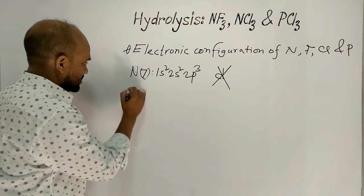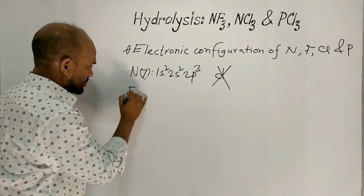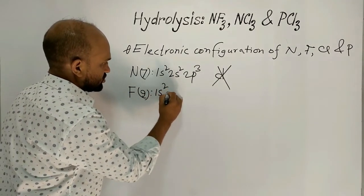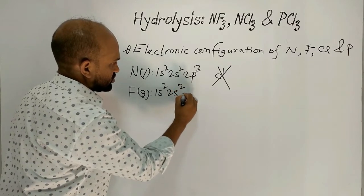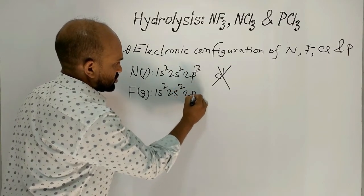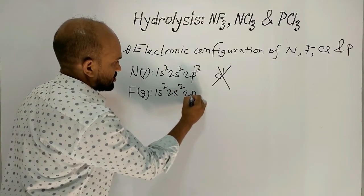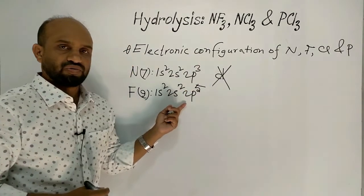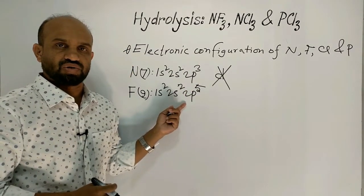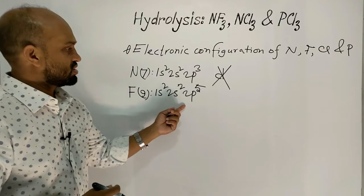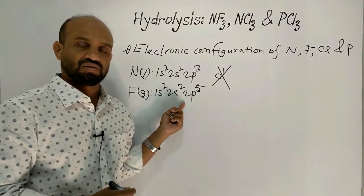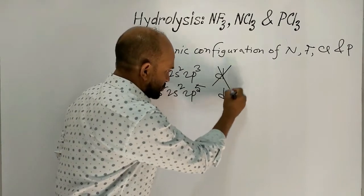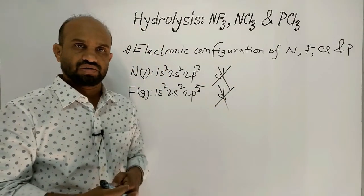Now let's see the electronic configuration of Fluorine: 1s², 2s², 2p⁵. For Fluorine as well, the second shell is its last shell. So it has no d orbitals.